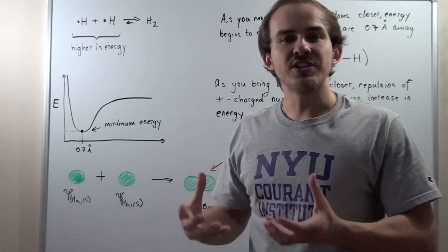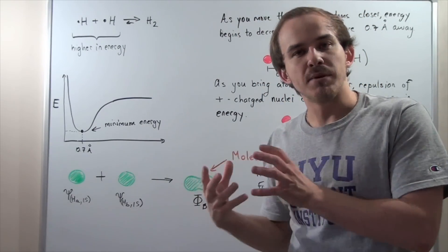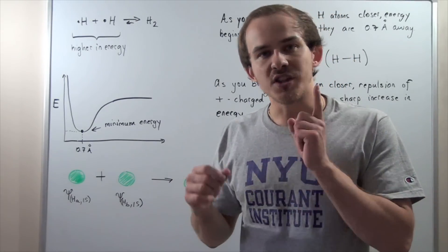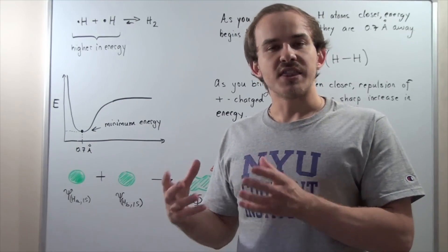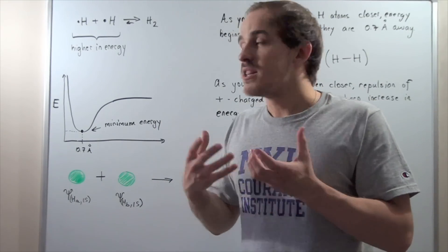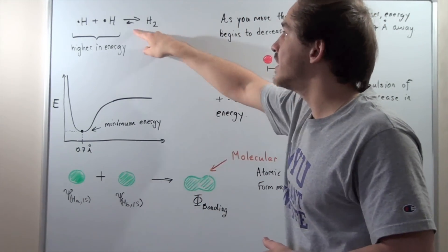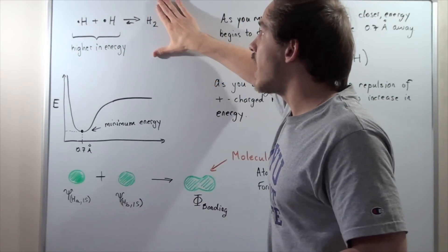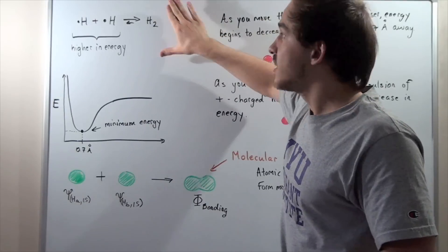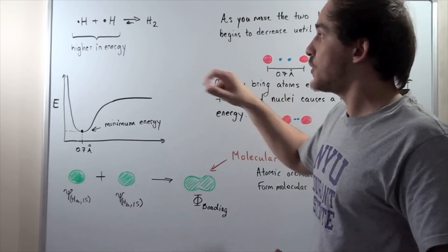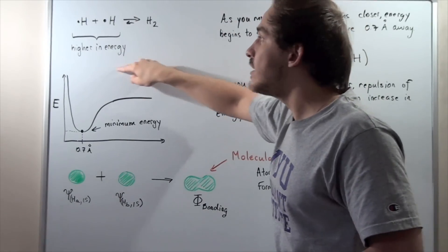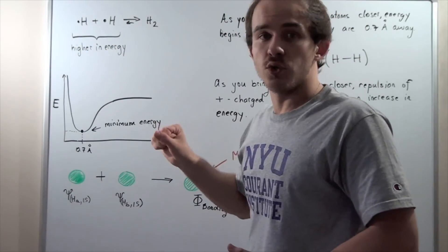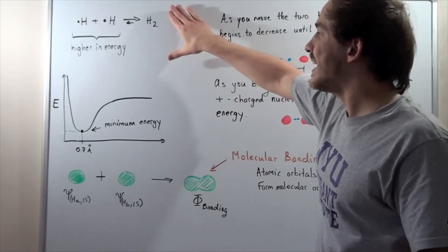To recap, nature likes to form stabilizing structures. Nature will not form a structure that is higher in energy. In other words, if this was higher in energy than this, this molecule would not form. The reason this forms spontaneously is because our energy of initial molecules or atoms is lower than the final.